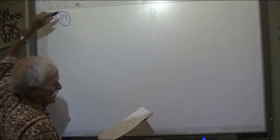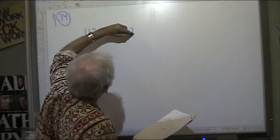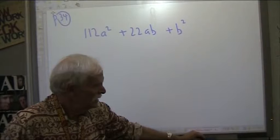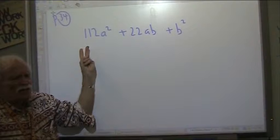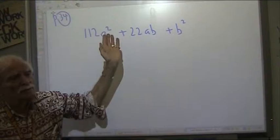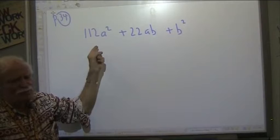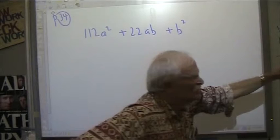All right. So here is a quadratic trinomial. So let's take a look at the first term. We have two variables in here. We have an A variable and a B variable, an A squared term and a B squared term. Now, written this way, what is the coefficient of my first term? 112. But, what do we need as the coefficient of our first term? One.